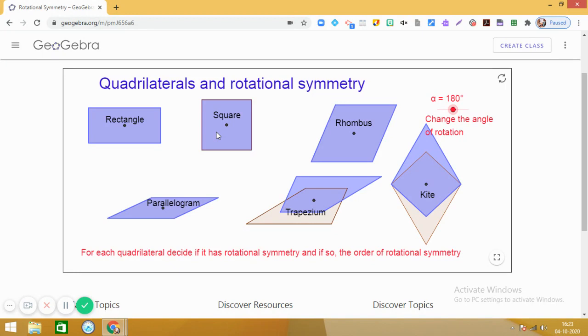So, angle of rotation for a square is 90 degrees. For a rhombus, it is 180 degrees. And for a parallelogram also, it is 180 degrees.